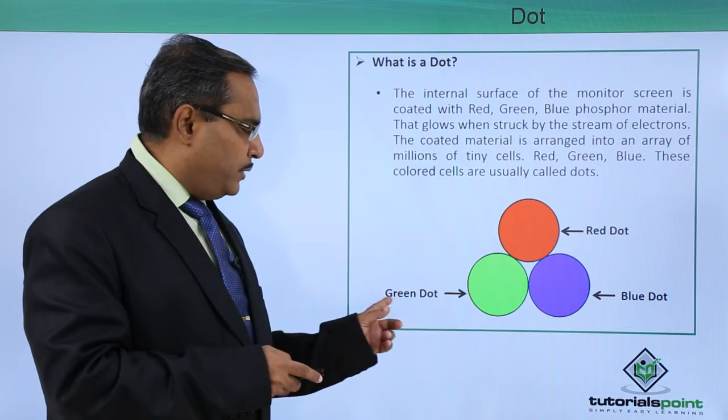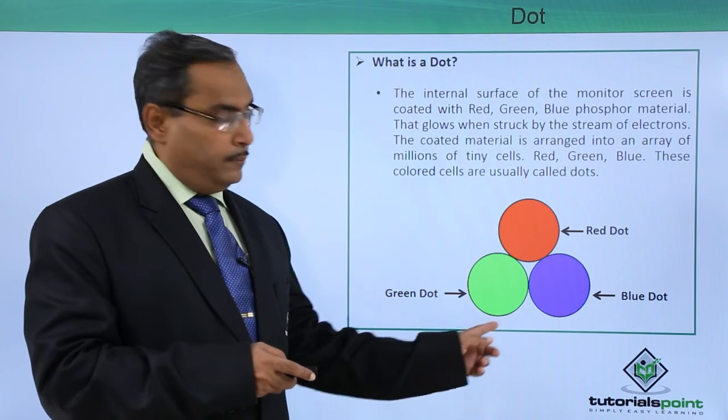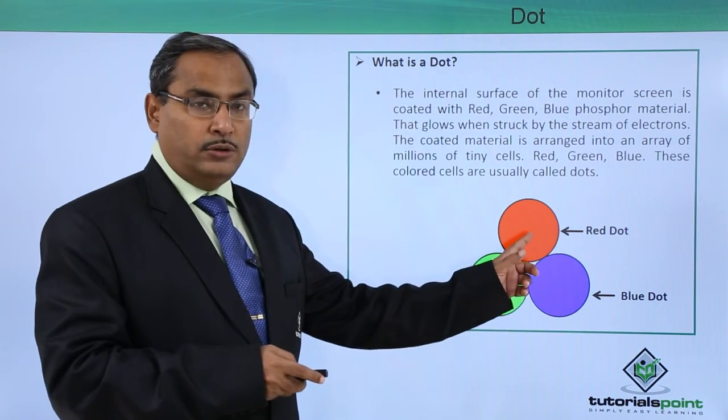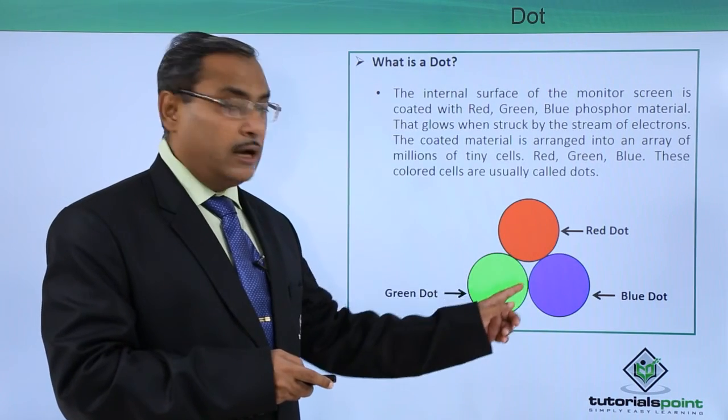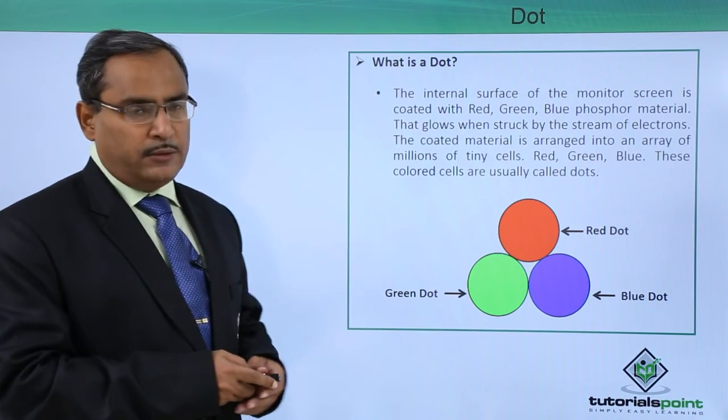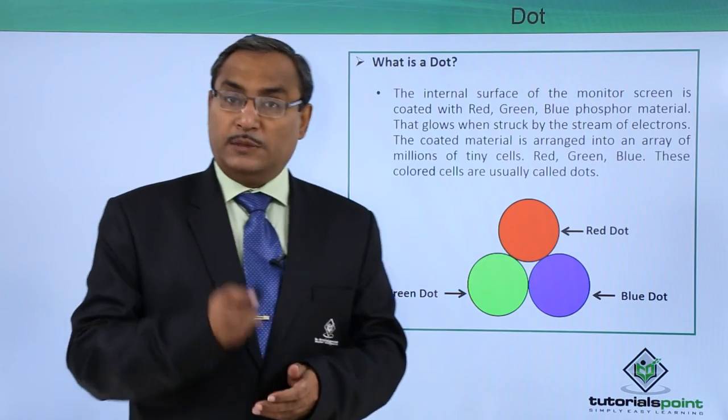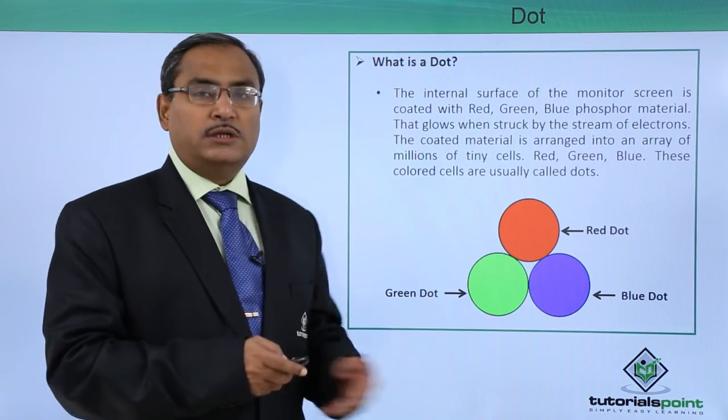Here you can find that we have this green dot, blue dot and red dot. By combining them depending upon the ratio of the color proportions, the respective color will be displayed for the pixel for which these dots are there.